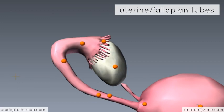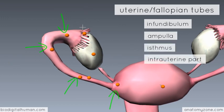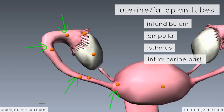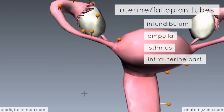The uterine tube has four parts: the infundibulum, the ampulla, the isthmus, and the intrauterine part. The fimbriae lead into the wide distal part known as the infundibulum. Then we have the ampulla, which is the middle and longest part of the uterine tube and the most common site for fertilisation of the egg by sperm — an important point to remember. The medial third is called the isthmus, the narrowest part, which opens into the uterus. Where the fallopian tube opens into the uterus is called the intrauterine part, inside the uterine cavity.